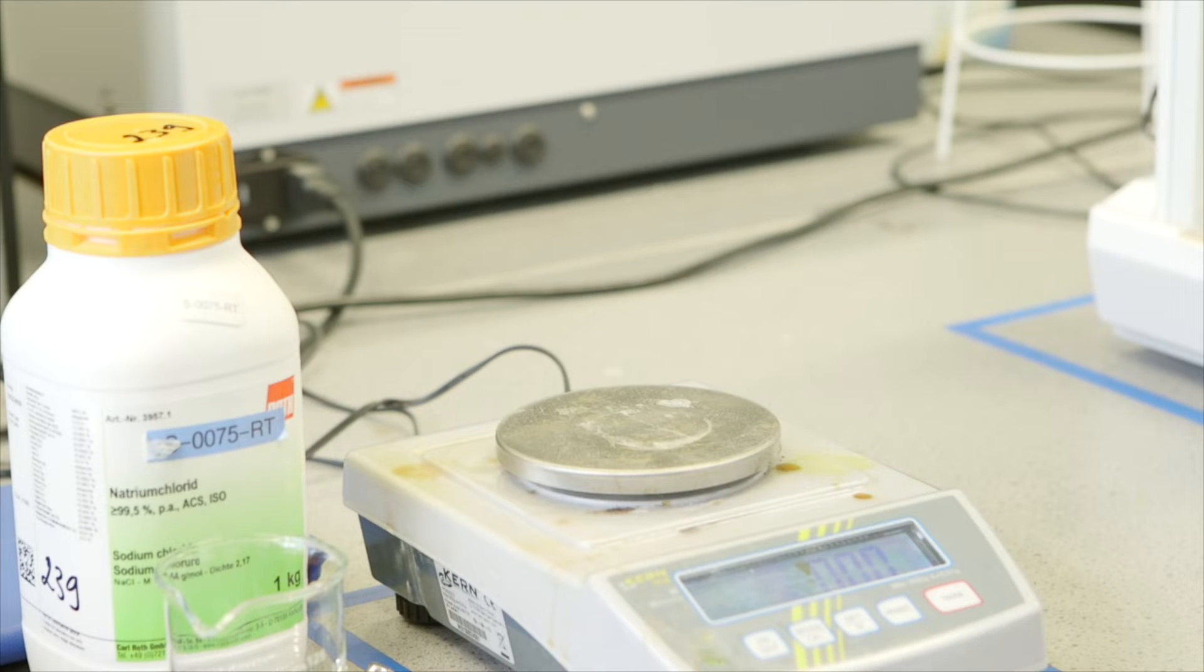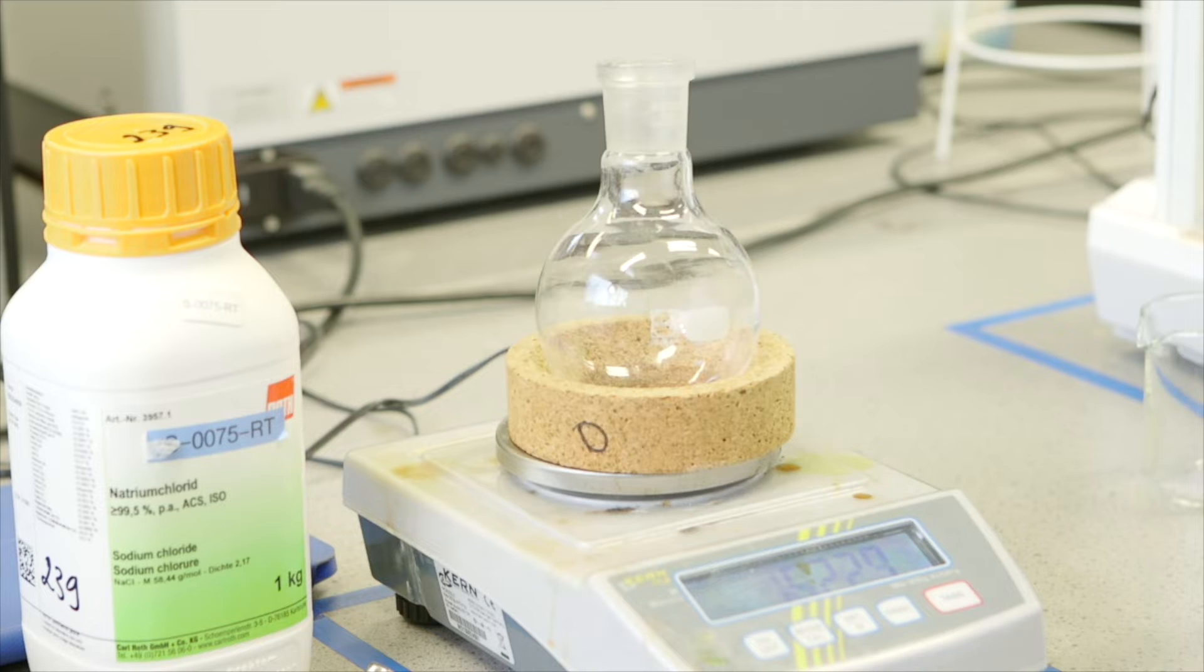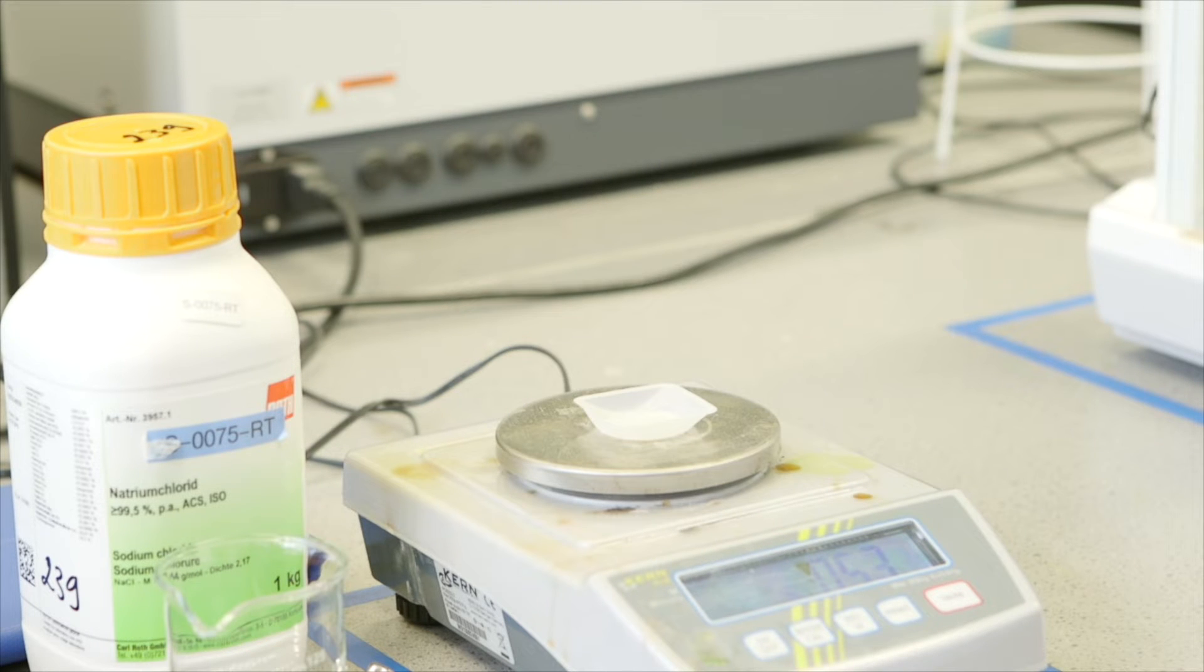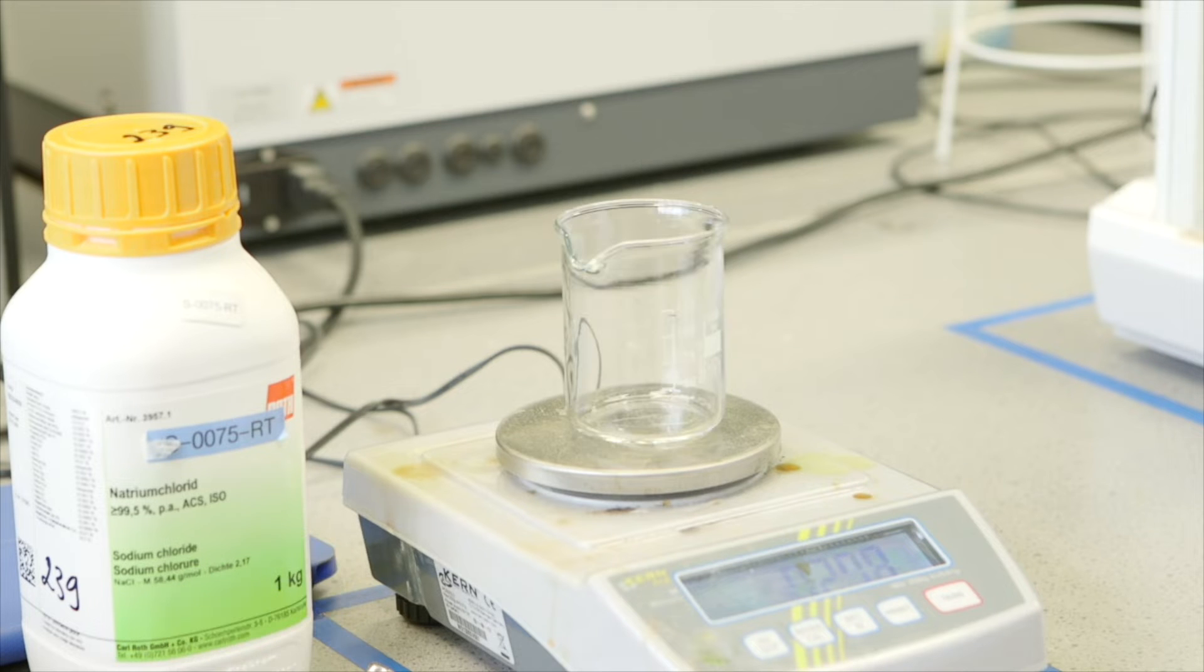When using the general purpose balance, a weighing boat, a beaker, or flask on a cork ring can be used. The same procedure for using the analytical balance can be followed. The following procedure is demonstrated with a beaker.